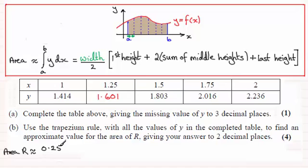So it's 0.25 divided by 2, half the width then, and we multiply this by the first height, which is 1.414. And then it's plus twice the sum of all the middle heights, that's these three here. So that's 1.601 plus 1.803 plus 2.016.